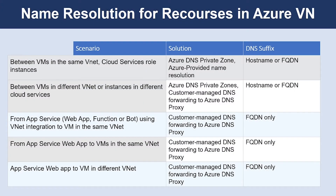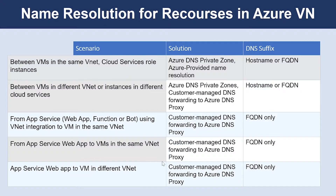When resources are deployed in a virtual network, they need to resolve domain names to internal IP addresses. They can use either Azure DNS private zones, Azure provided name resolution, or name resolution that uses your own DNS server. In this table, you can see different scenarios and corresponding name resolution solutions. Please note that Azure DNS private zone is the preferred solution and gives you flexibility in managing your DNS zones and records.